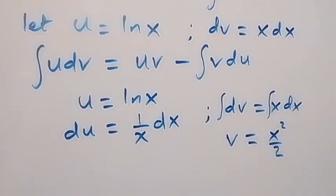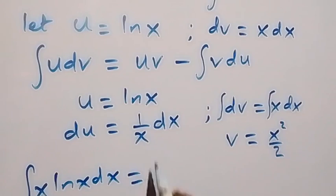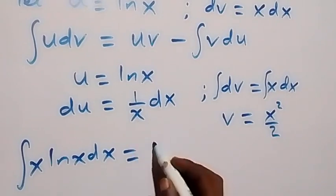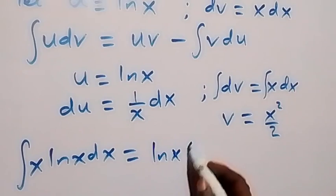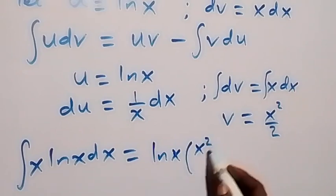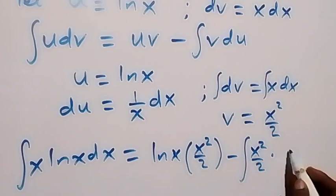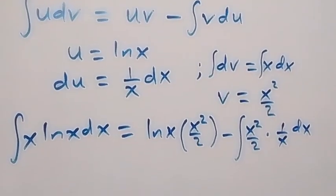Then from here we have the parameters we have to use now. Then this integral x ln x dx now in form of uv minus integral v du. We then become u now is ln x, then times v which is x squared over 2, then minus integral v which is x squared over 2 times du here is 1 over x dx.